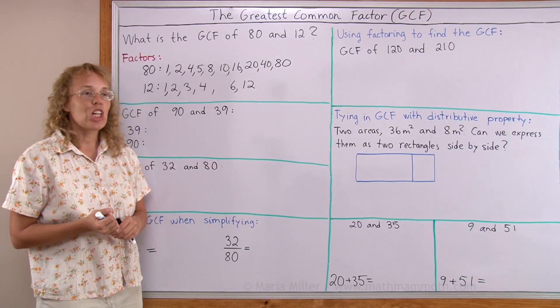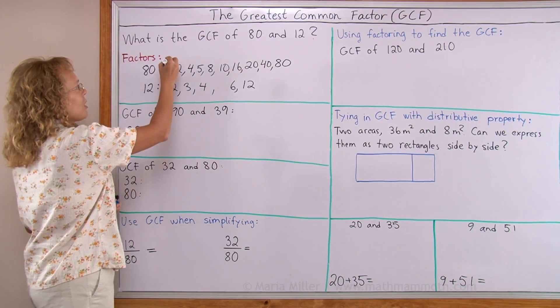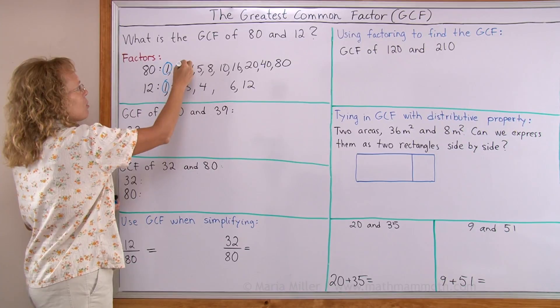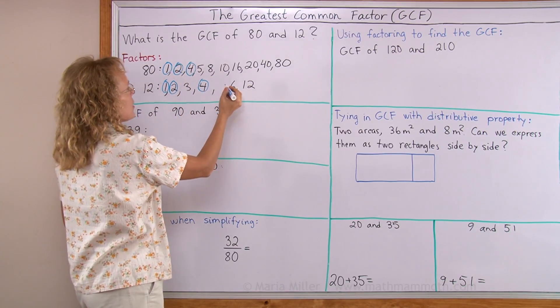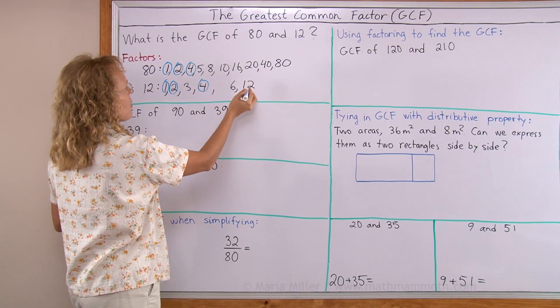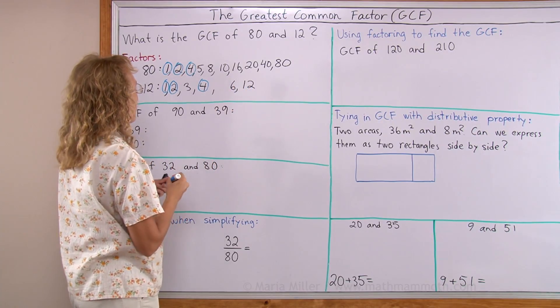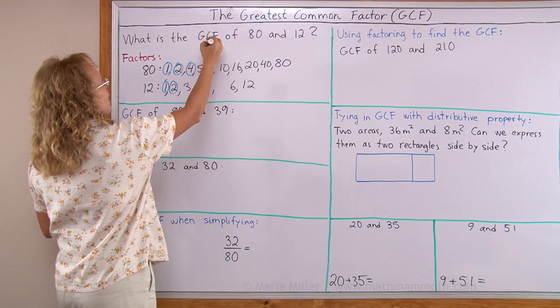And now we check which ones are the common factors or numbers in both lists. There's 1 and 2, and 4. And 6? No. 12? No. So 4 is the greatest common factor.